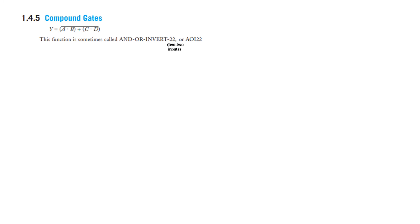For compound gates, the naming convention is as follows. This type of function is called AND-OR-Invert 22 — AOI22. This means: AND, then OR, then invert, with 2 inputs on one AND and 2 inputs on the other AND, written as AOI22.